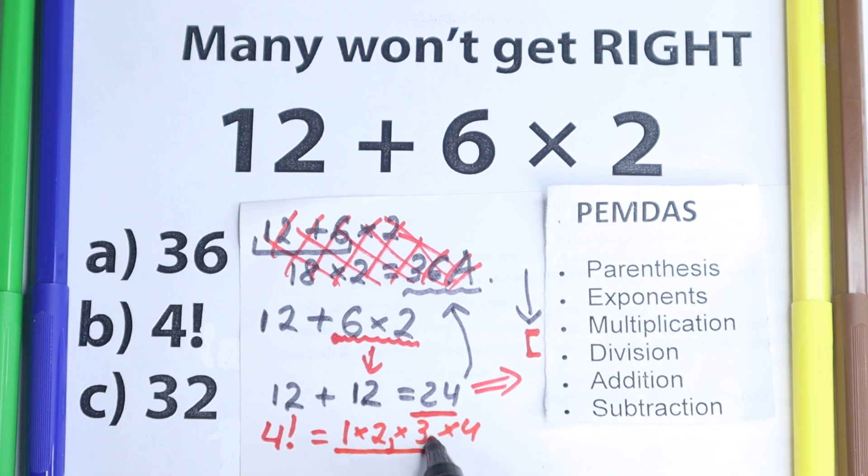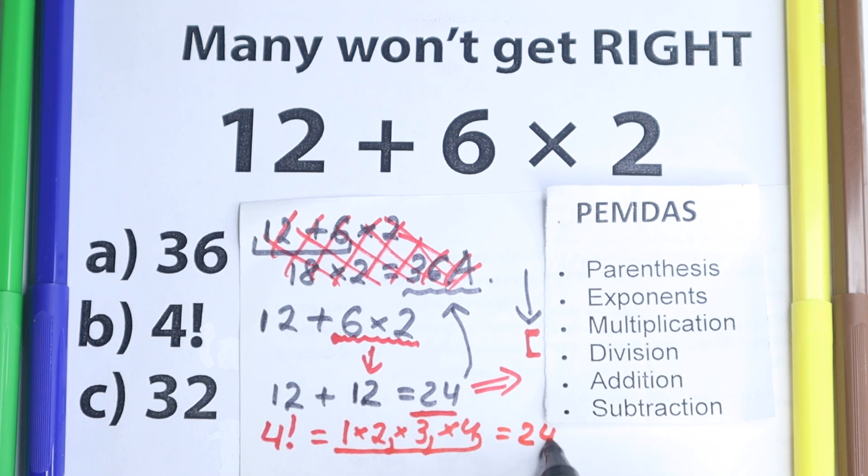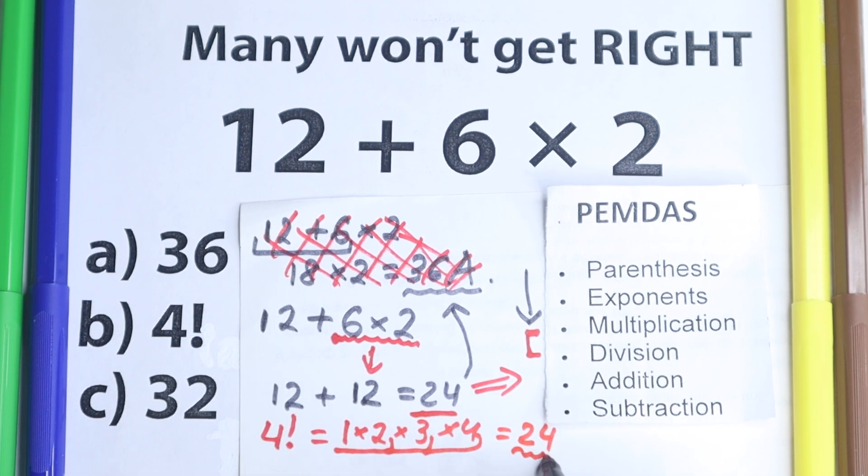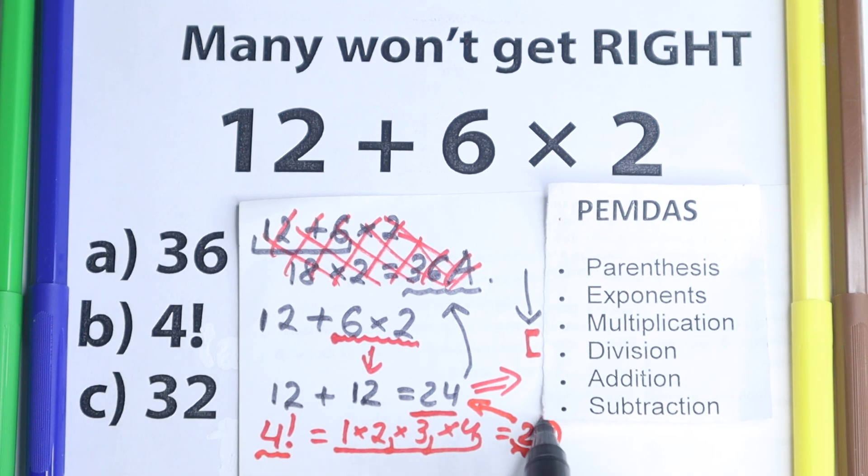1 times 2 is 2, 2 times 3 is 6, and 6 times 4, yeah, this is really great. This is 20, 24, which is absolutely the same as 4 factorial, and in the same way this is the same as our answer, because we solved it according to PEMDAS.